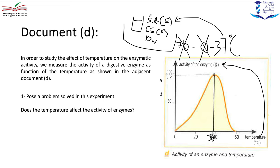So now I want to study the effect of temperature on the activity of the enzyme. We have a document — it's in Activity 3, Document D — which represents the activity of an enzyme as a function of temperature. The variable factor is the temperature, which varies from 0 to 60 degrees Celsius.